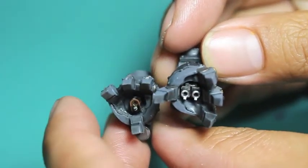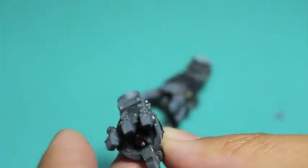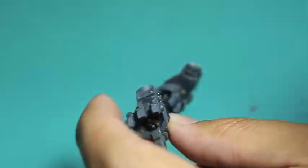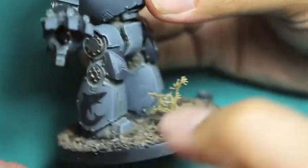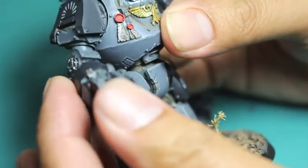And the grasping twin linked bolter hand to have the fingers on the side of it. So here you can see what I mean with the flamer arm going in and the bolter arm going in, and the fingers are at different angles.